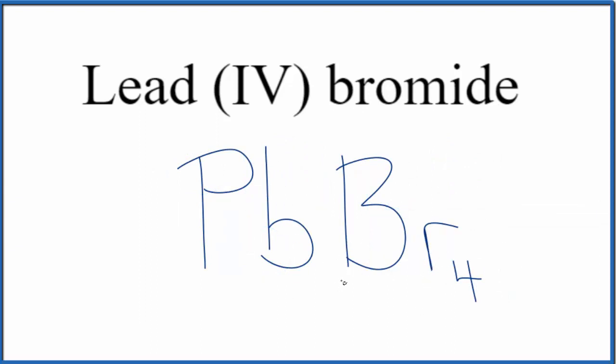If you were asked to write the name based on the formula PbBr4, you know that bromine, that'll form those bromide ions 1-. So the lead, it's going to have to be 4+, so that's why we'd write the Roman numeral, lead (IV) bromide.